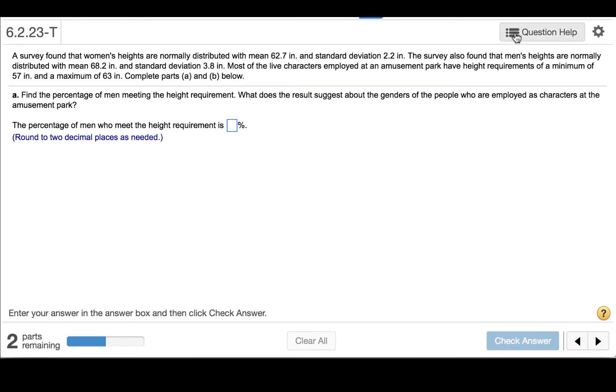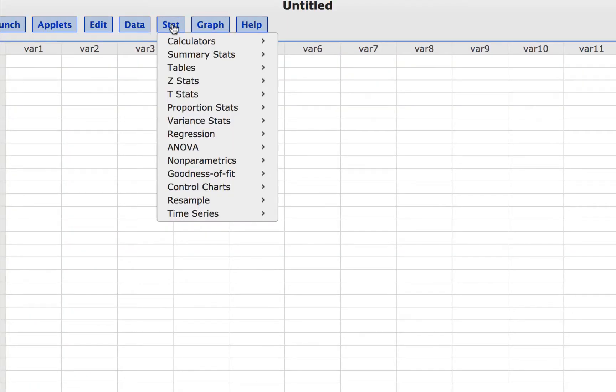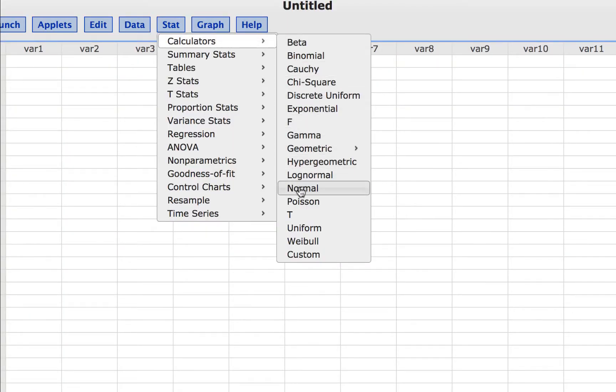We can do this using StatCrunch by clicking Question Help, StatCrunch, and then we'll click Stat, Calculators, Normal.